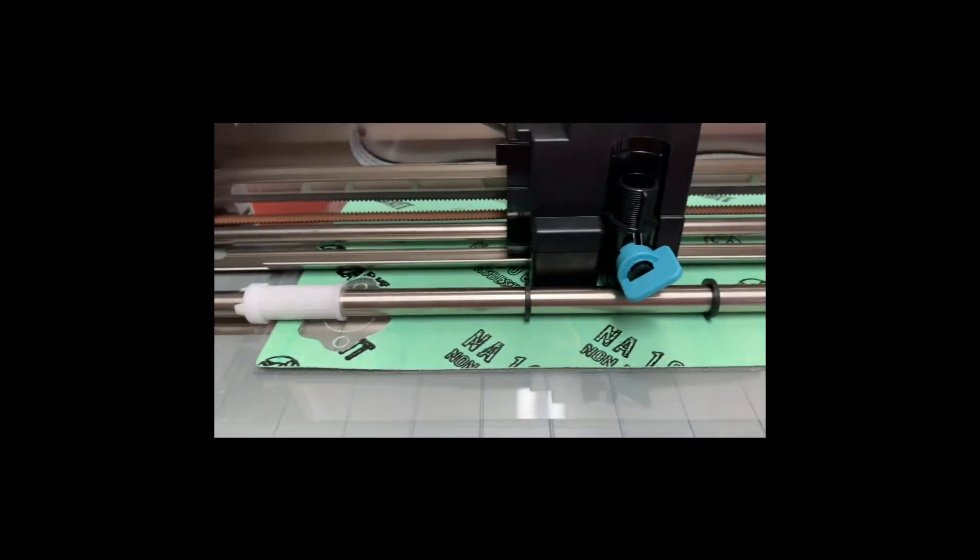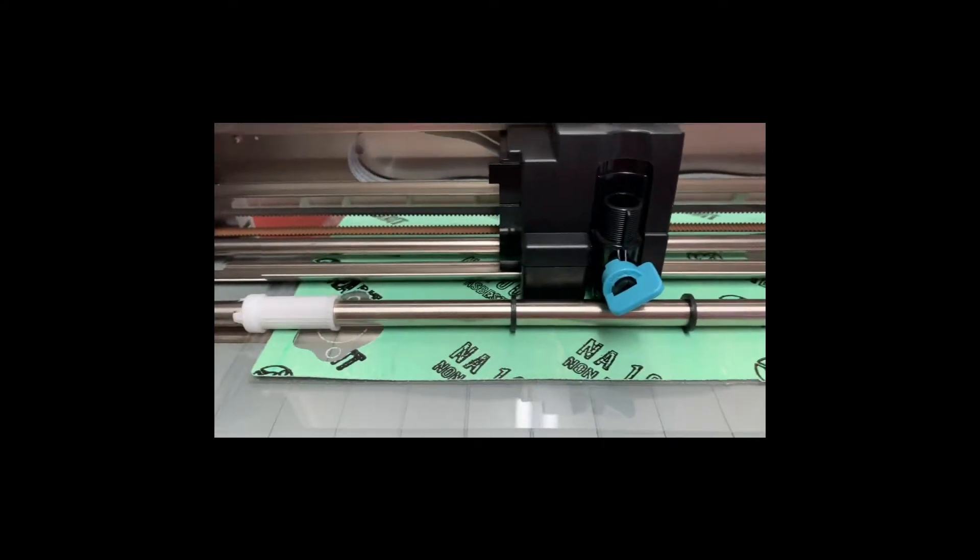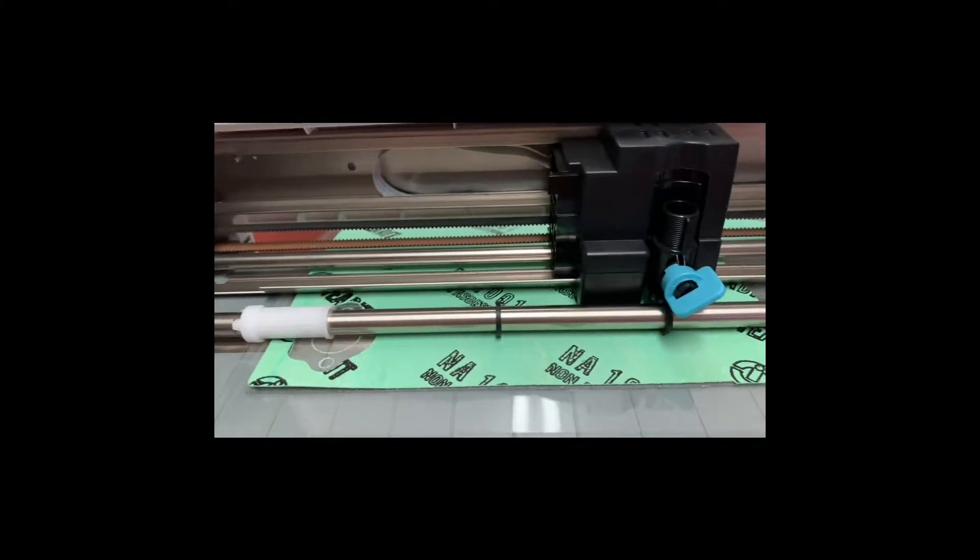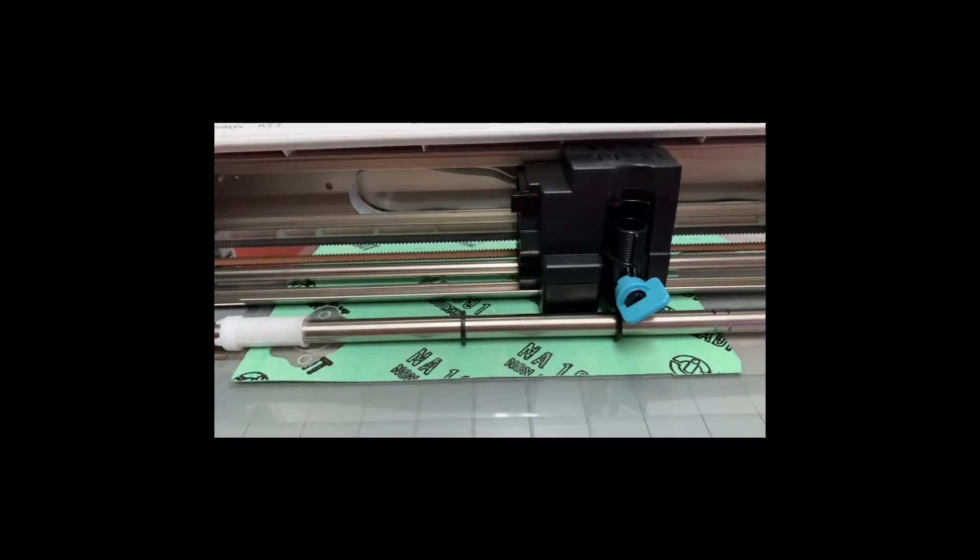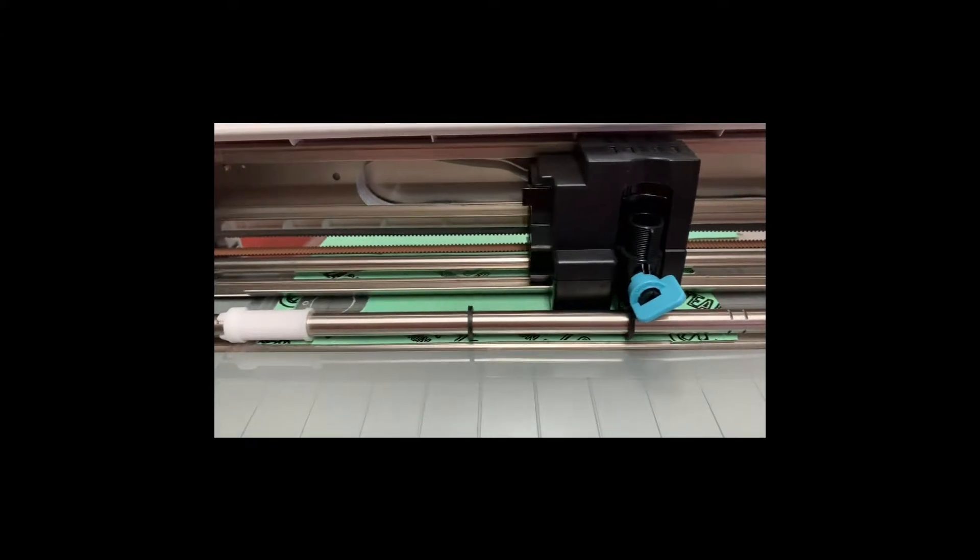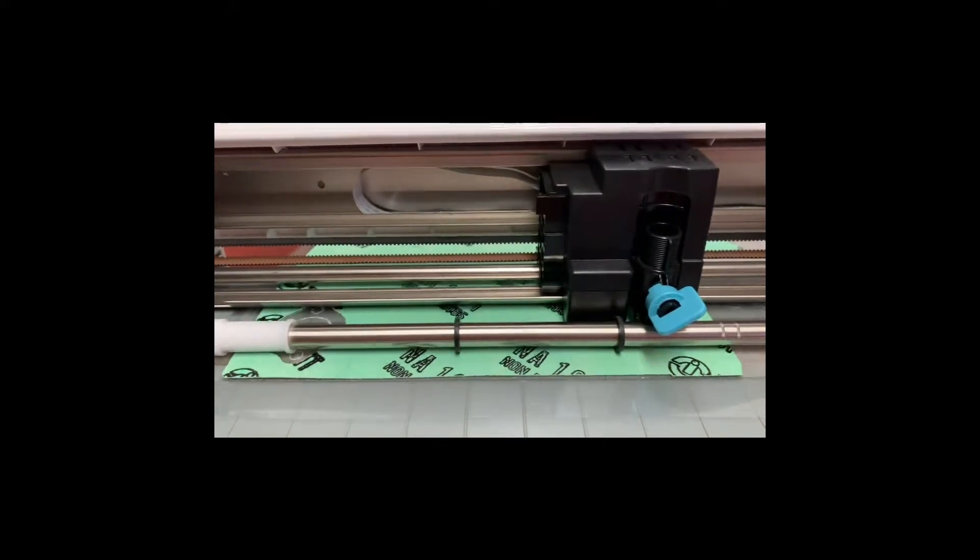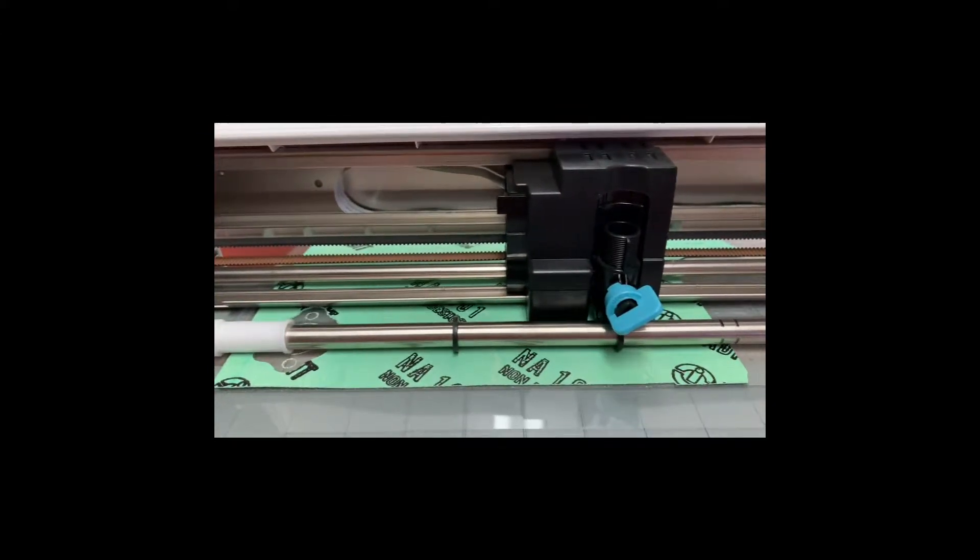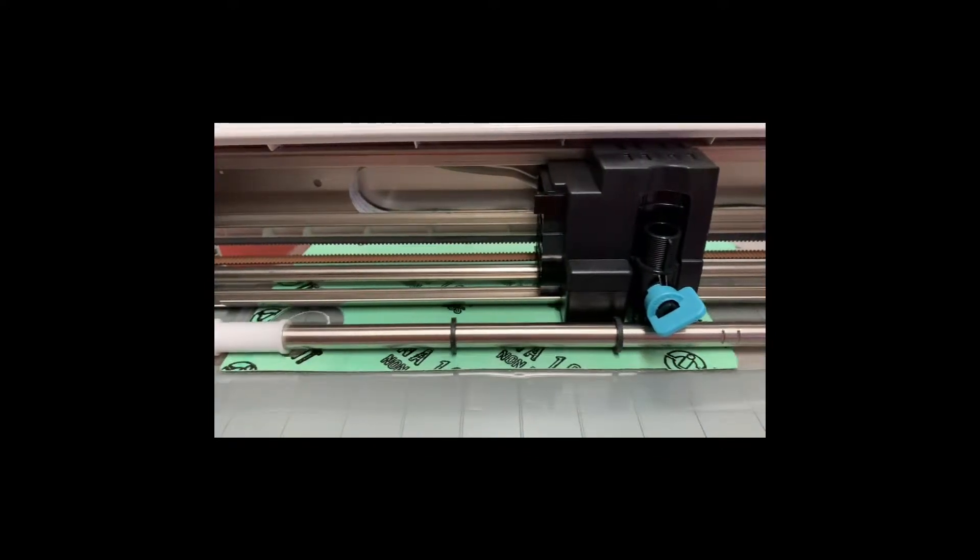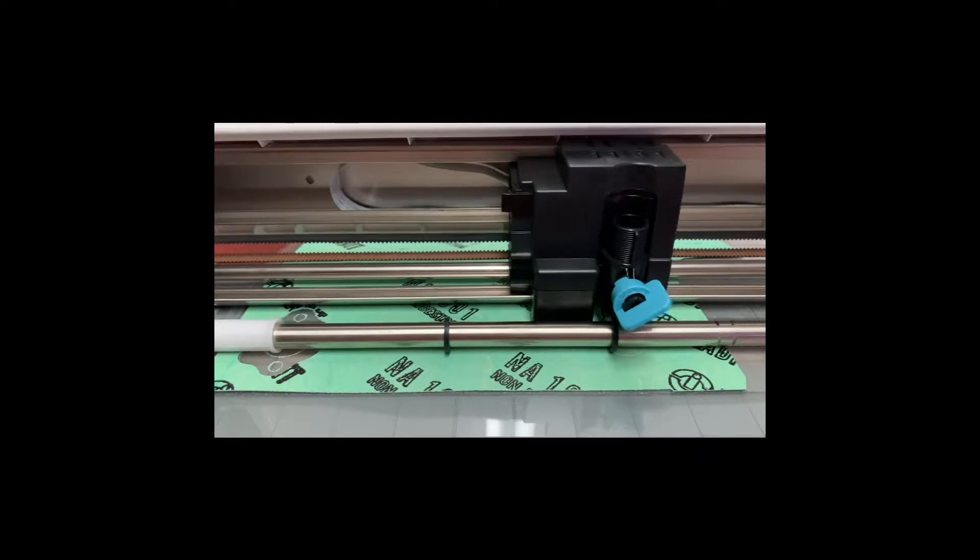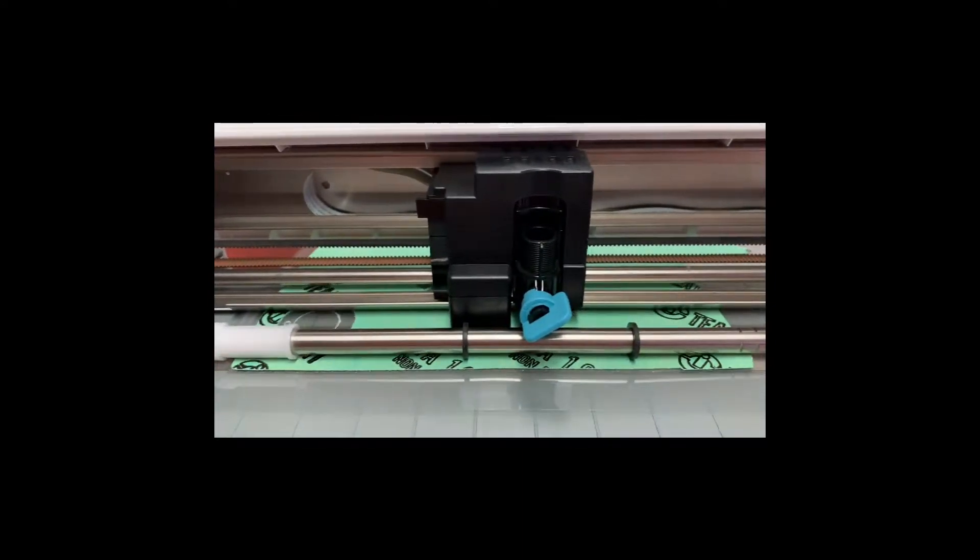Took a while to get the settings, but Silhouette has a material they call chipboard. I played with a few of the presets and the chipboard setting for this 15-thousandths thick engine gasket stock works almost perfectly, as you'll see.